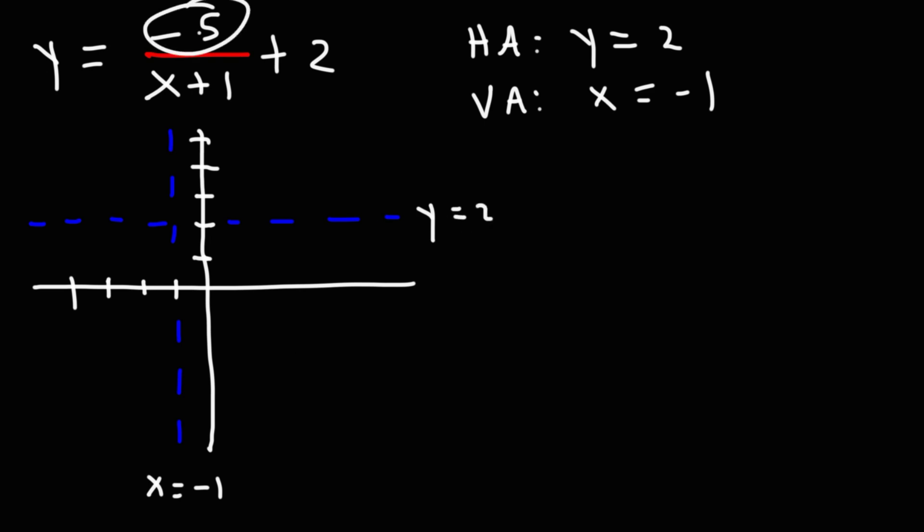So let's start with the vertical asymptote, x equals negative 1. And then we have a horizontal asymptote at y equals 2. Now notice that we have a negative sign. So the graph is not going to be in quadrants 1 and 3 of the asymptotes, but it's going to be in quadrants 2 and 4.